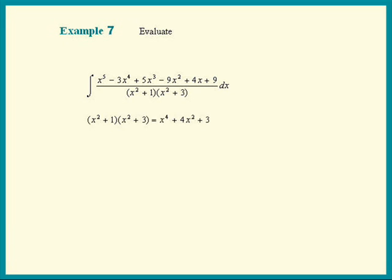Let's multiply the denominator out, because that's going to be our divisor. x squared plus 1 times x squared plus 3 equals x to the 4th plus 4x squared plus 3.